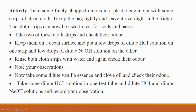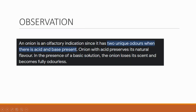Now back to the activity. Take two of the cloth strips and check their odor first. Then add an HCl solution, and then add NaOH. HCl is acidic in nature and NaOH is basic in nature. With the acidic HCl, you will get the onion-type smell. With the basic NaOH, it becomes odorless — meaning no smell.